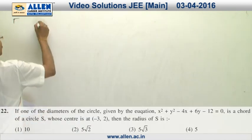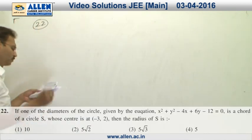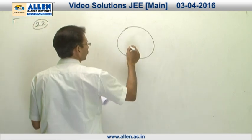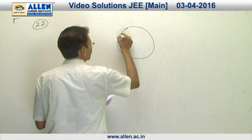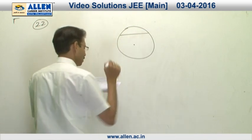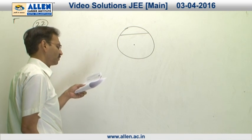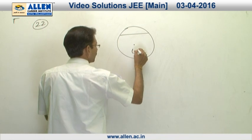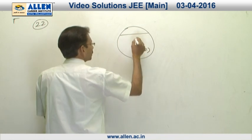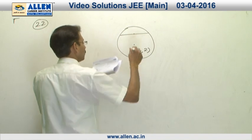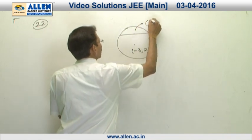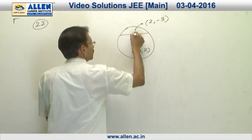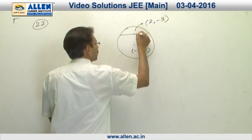In question number 22, we have a circle and diameter of that circle is called for another circle s. The center of circle s is minus 3 comma 2 and midpoint of this chord will be the center of given circle which is 2 comma minus 3 and as the radius is 5.